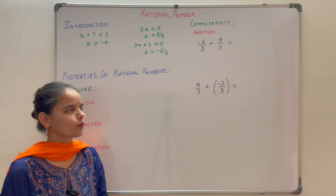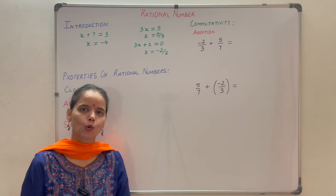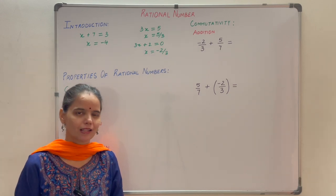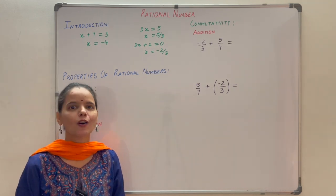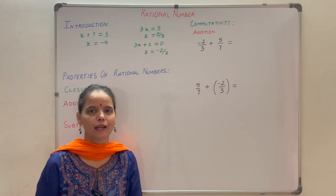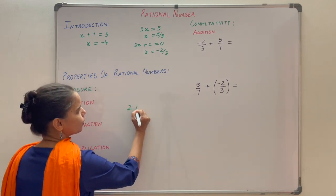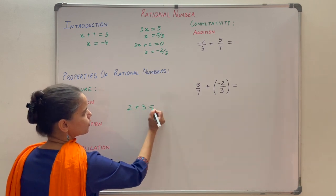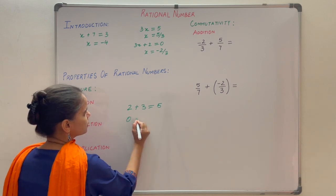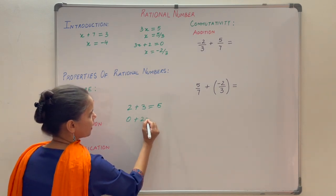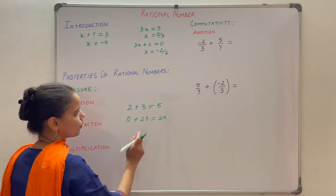The first property we are going to discuss is closure property. You know that whole numbers are closed under addition — it means whenever you add any two whole numbers you will always get a whole number. For example, 2 plus 3 gives 5, and 0 plus 29 gives 29. So you have added two whole numbers and got a whole number.